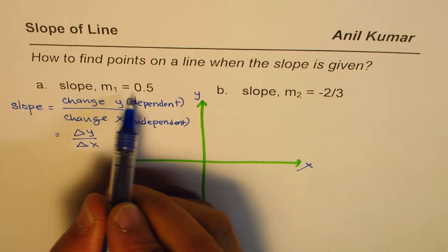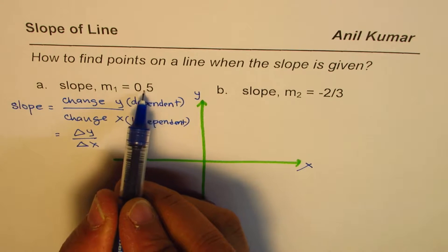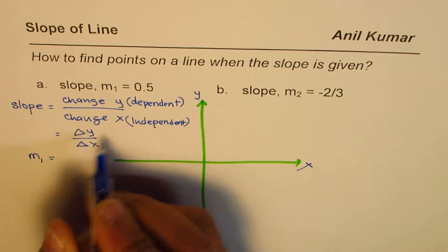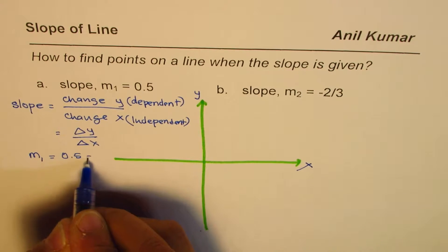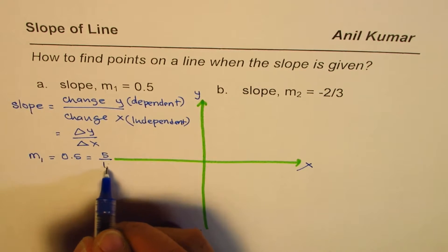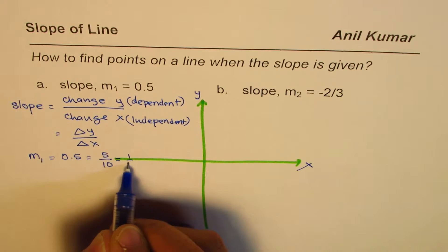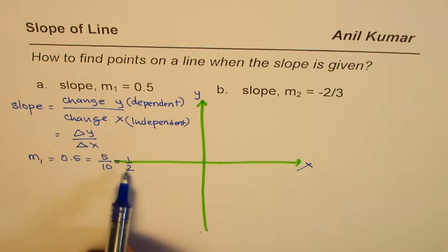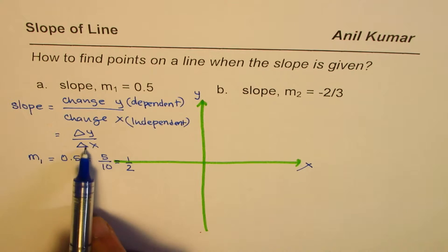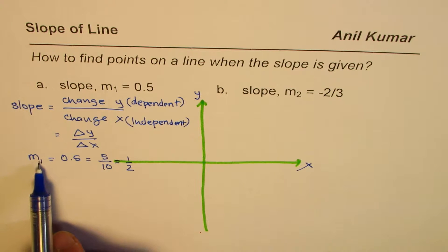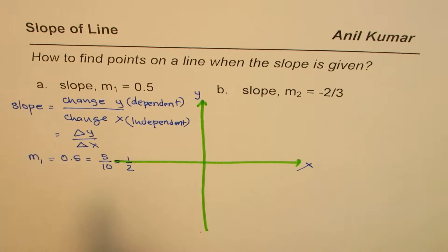In this question we are given that the slope of the line is 0.5, so slope m1 is 0.5. I could write this as 5 over 10, which is one half. It is better to write it as a fraction so that we can correlate change in y and change in x.